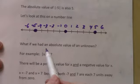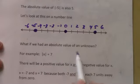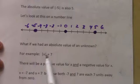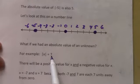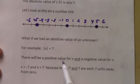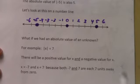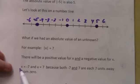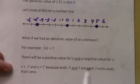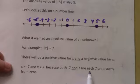So what if we have an absolute value of an unknown? For example, the absolute value of x equals 7. Well, there will be a positive value for x and a negative value for x. In this example, x could equal negative 7 and 7, because both negative 7 and 7 are each 7 units away from 0.